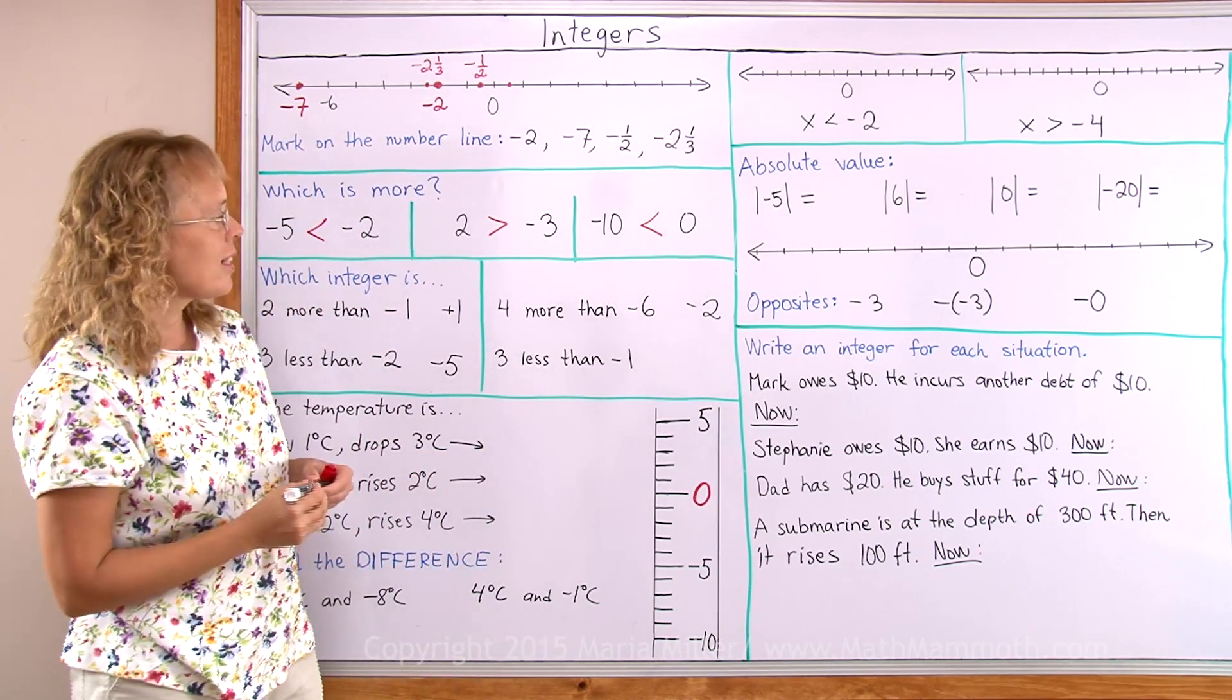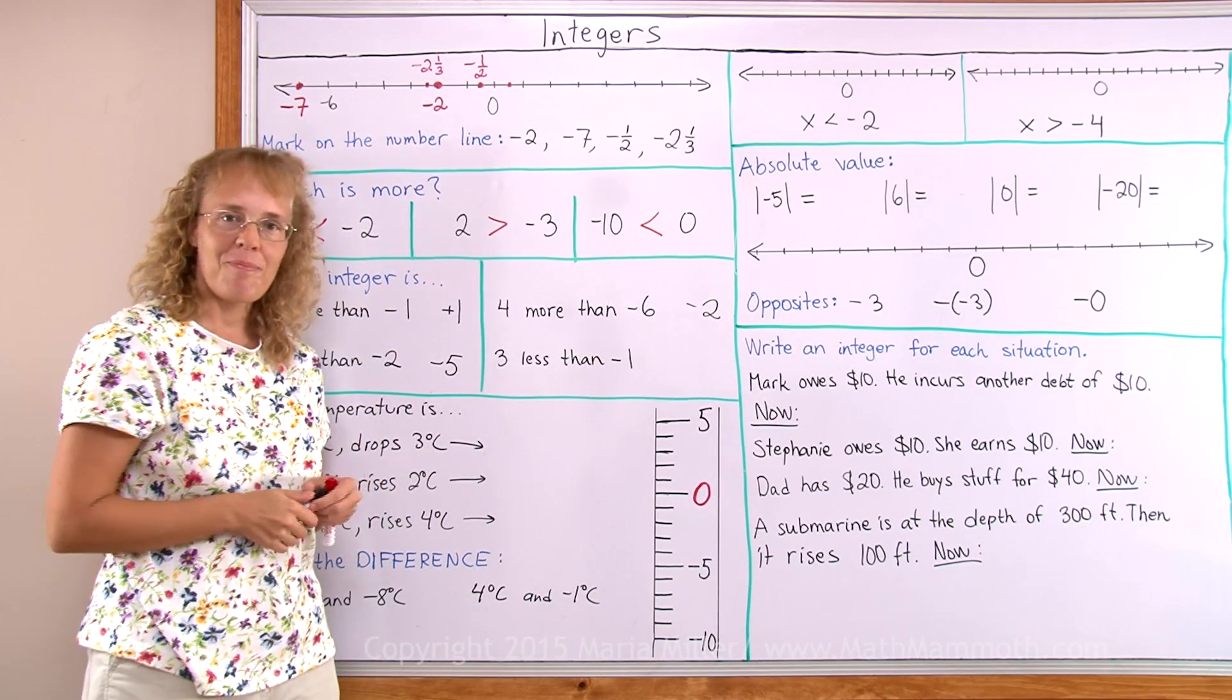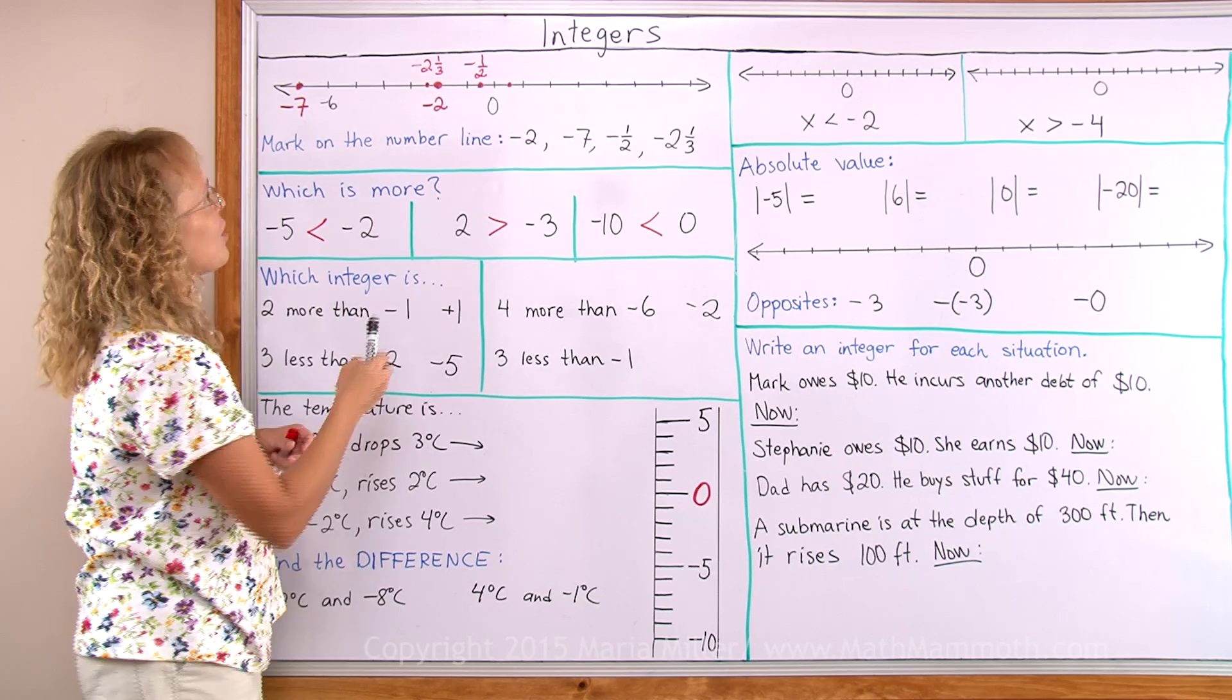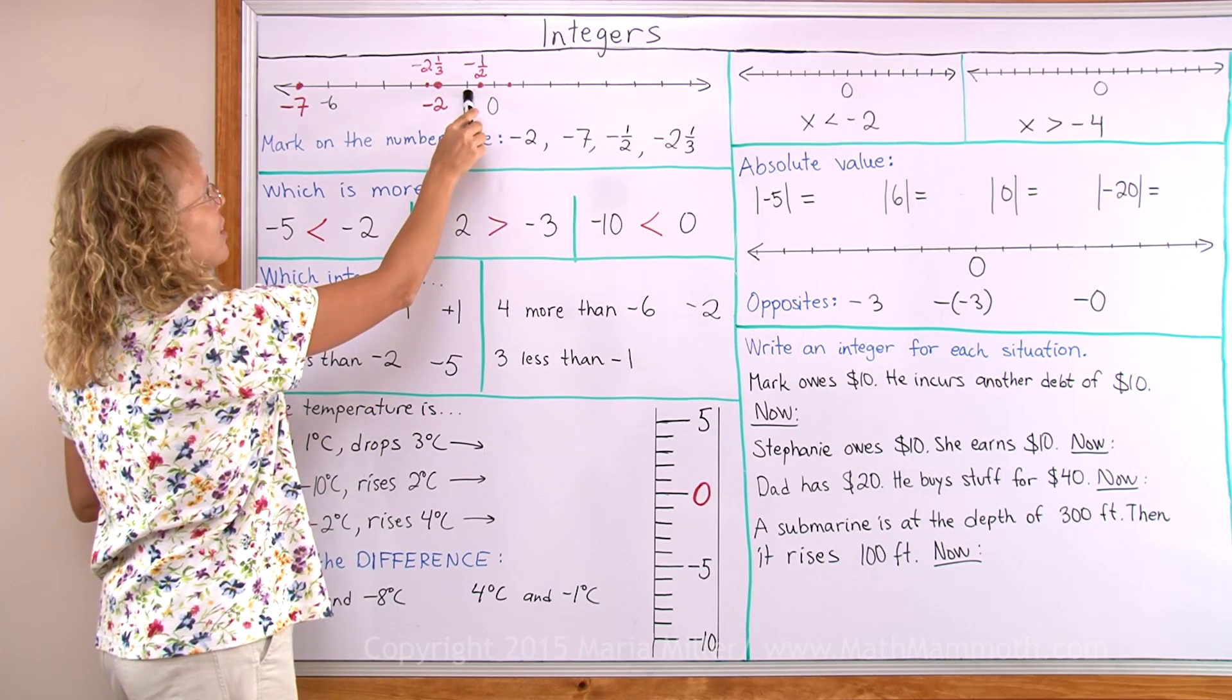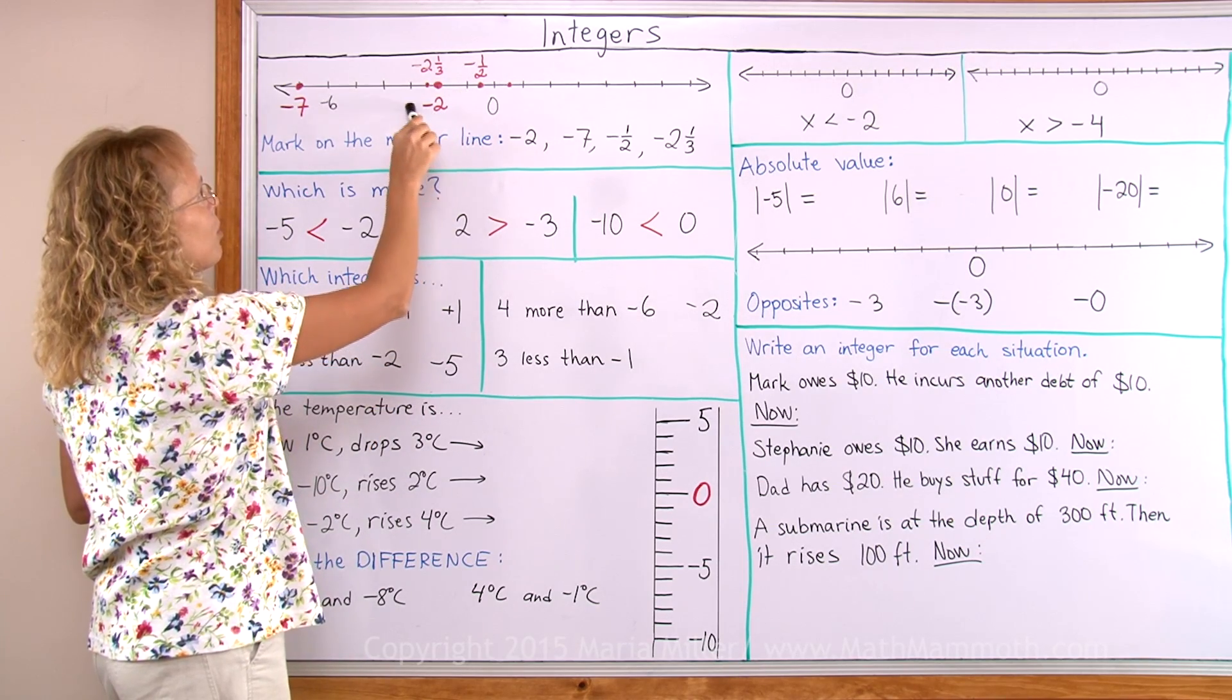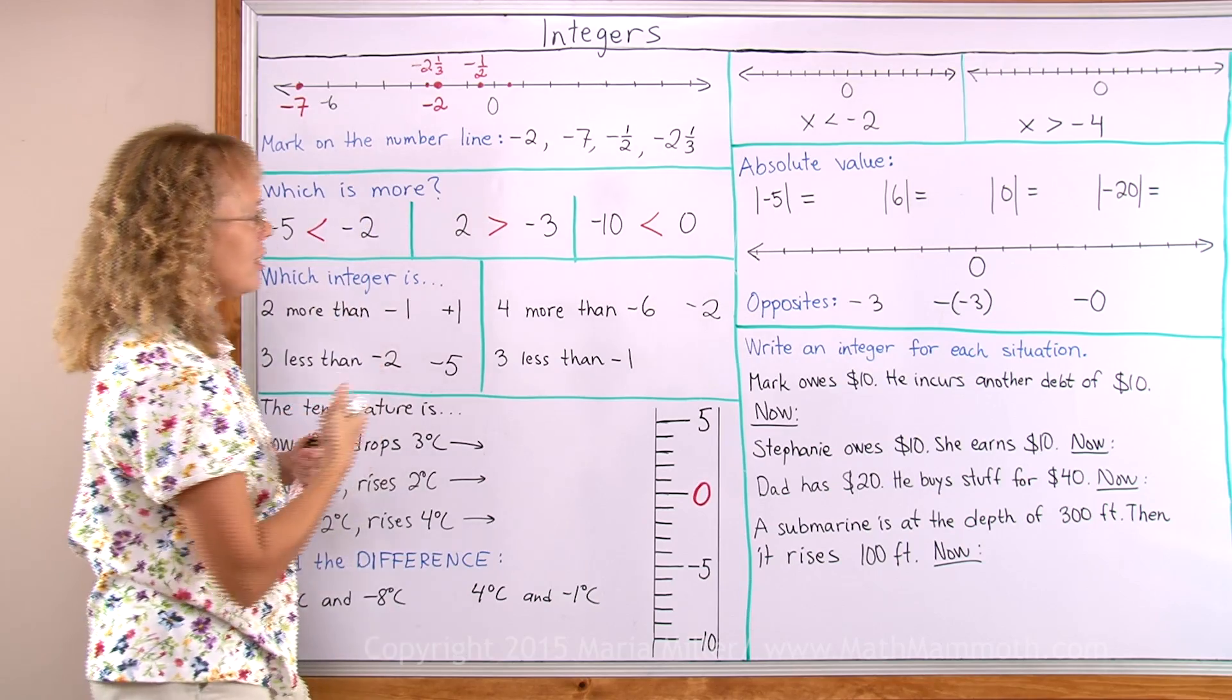And 3 less than negative 1. Can you tell? Negative 1 is here and 3 less. We go more towards the negatives. It is negative 4.